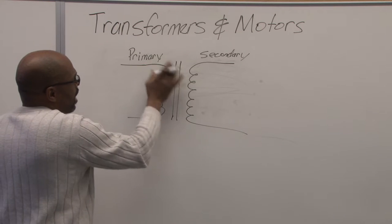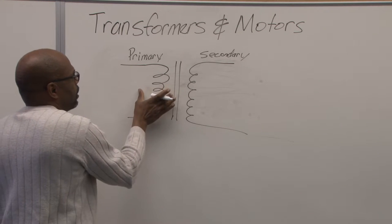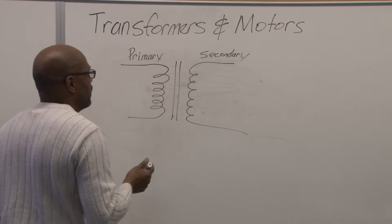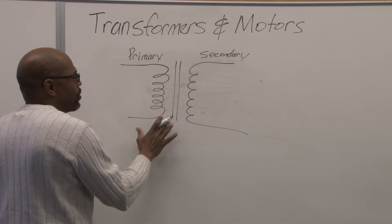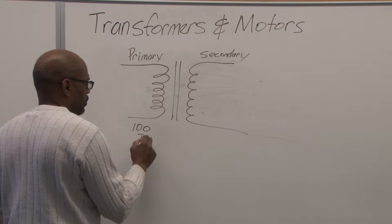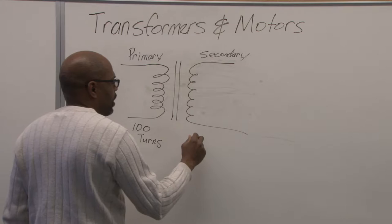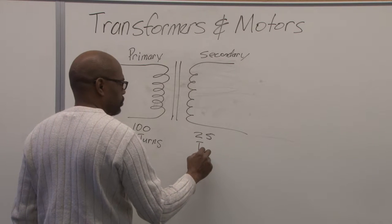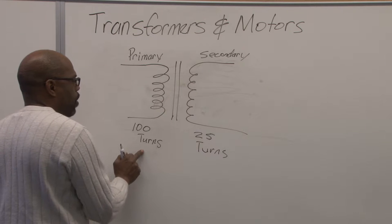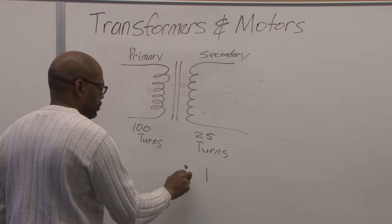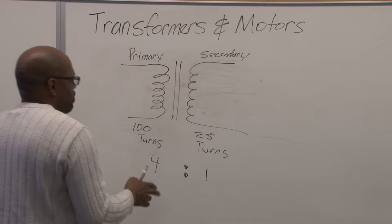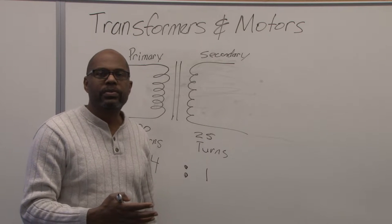So if we look at this, this primary side has a certain number of coils or turns, while the secondary side would have another set of turns in that coil. And it's a ratio based on the voltage. So let's say this has 100 turns and the secondary side has 25 turns. So it would be a ratio between 1 to 4, a 1 to 4 ratio. So we look at the 4 turns here to 1 turn here.